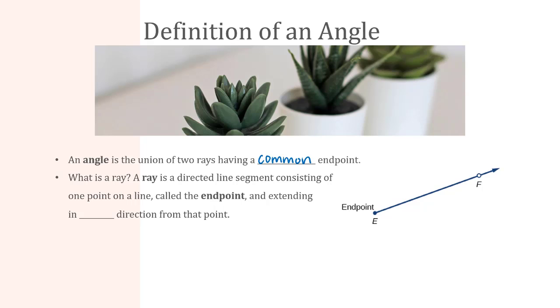But what are two rays? Well, a ray is a directed line segment that consists of one point on a line, called an endpoint, and it extends in just one direction. So the difference between a ray and a line: a line would extend in both directions, a ray is only extending in one direction.